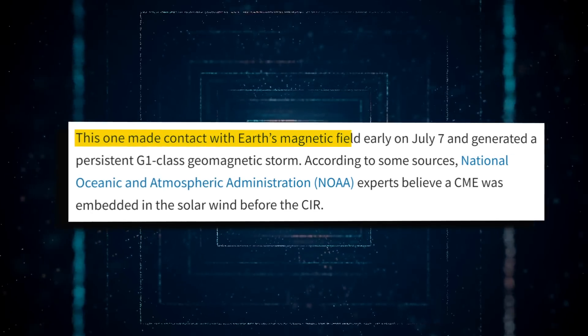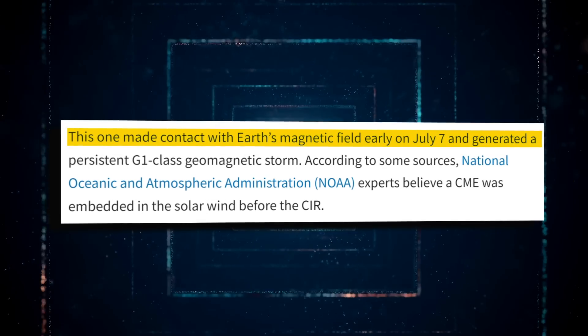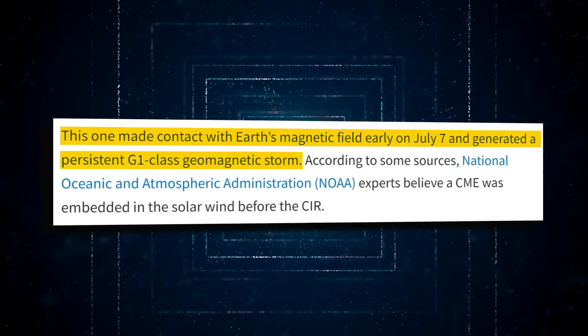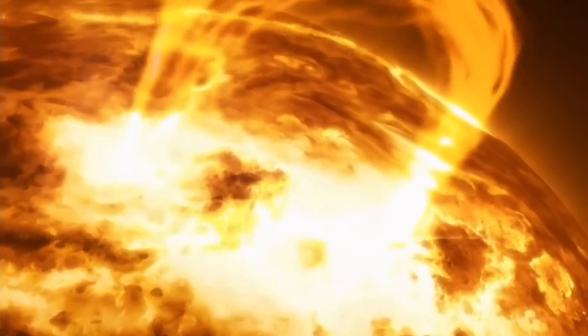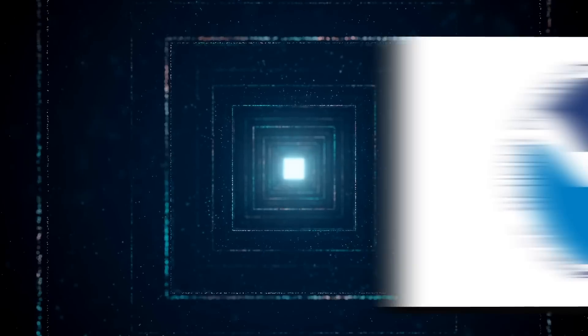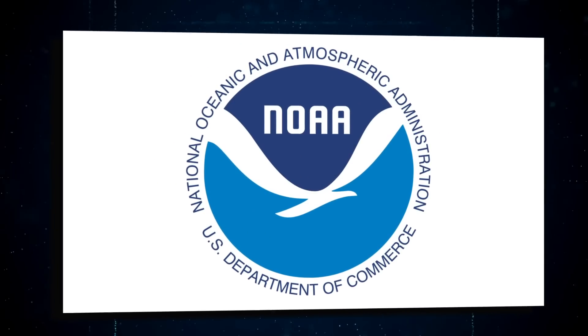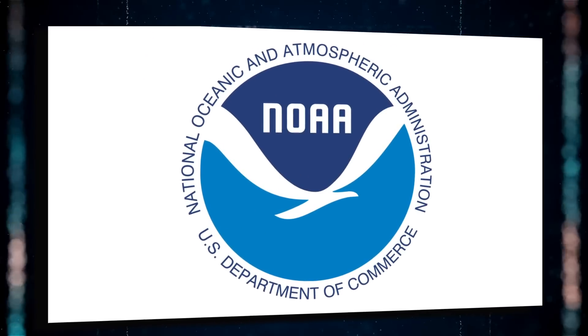This one struck the Earth's magnet in the early hours of July 7th, causing a long-lasting G1-class geomagnetic storm. A coronal mass ejection was embedded in the solar wind ahead of the co-rotating interaction region, according to National Oceanic and Atmospheric Administration, NOAA, experts.